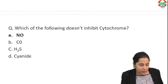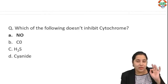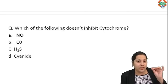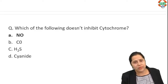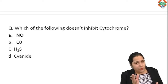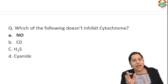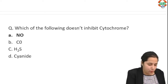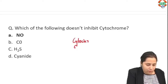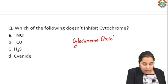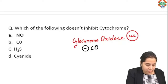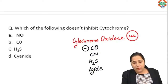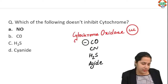Which of the following does not inhibit cytochrome oxidase? Inhibitors of the electron transport chain and uncouplers are very important. Cytochrome oxidase, or complex 4, is a copper-containing complex. It is inhibited by carbon monoxide, cyanide, hydrogen sulfide, and azide. All of these inhibit complex 4. The answer is nitric oxide — it does not inhibit complex 4.